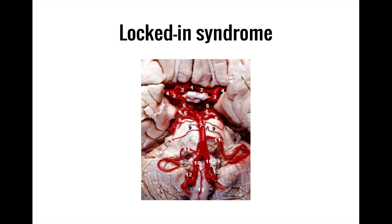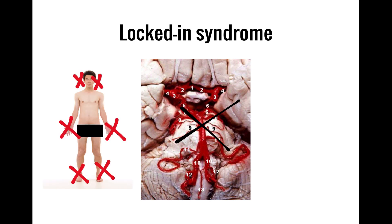The last stroke we'll talk about is a stroke in the basilar artery itself. The basilar artery runs alongside the pons and medulla and sends off branches to the midbrain. Because it supplies all three parts of the brainstem, a stroke in the basilar artery can have wide-reaching and severe consequences. One possible manifestation is known as locked-in syndrome — a tragic condition in which someone is completely paralyzed due to damage of the corticospinal tract as well as most of the cranial nerves.